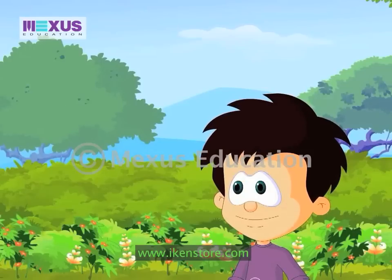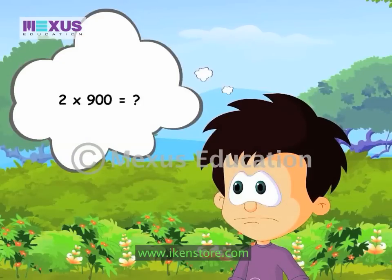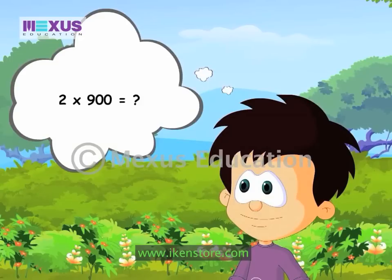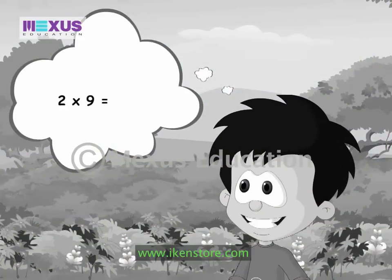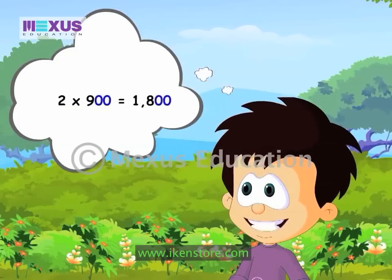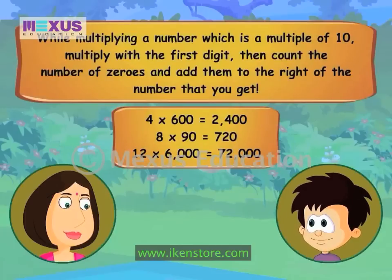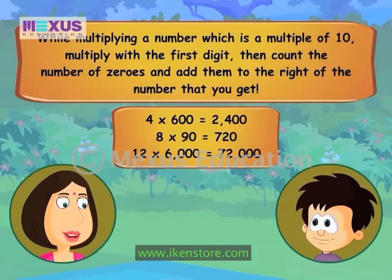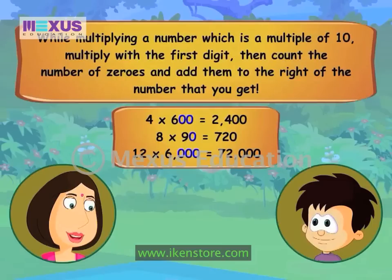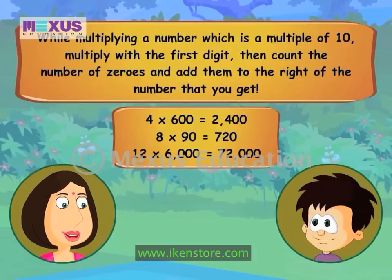What if I ask you to multiply 2 with 900? All you need to do is multiply 2 with 9 and add two zeros after the answer. 2 x 9 is 18, and putting two zeros to its right makes it 1800. Am I right mom? Yes you are, Jessie. You can do this while multiplying any number that ends with zero. Just multiply the first digit and add as many zeros to the right side of the product as there are in the number being multiplied.